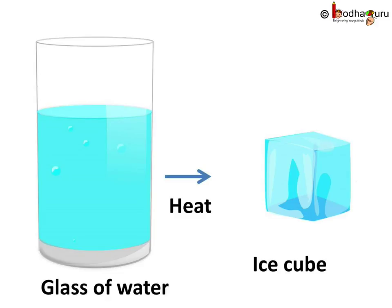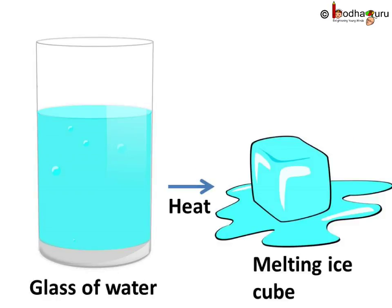So, when two bodies are kept in contact, the heat flows from the hotter to the colder body — and this we know already. This transfer of heat continues until both the bodies attain the same degree of hotness or coldness. That is, they attain the same temperature. At this stage, we say the bodies have achieved thermal equilibrium.